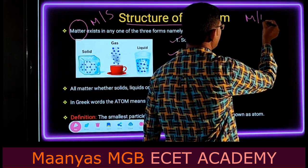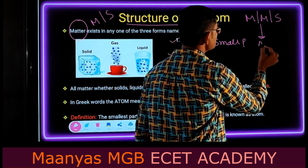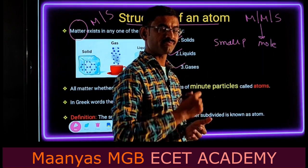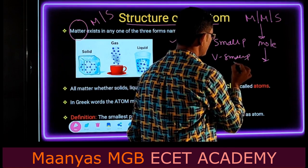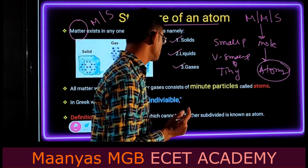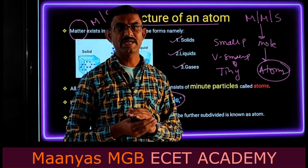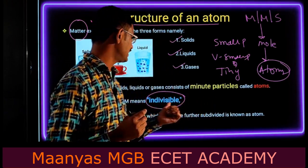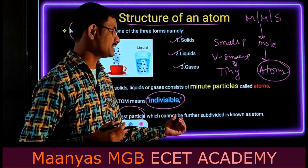Matter, or material or substance, can be divided into small particles known as molecules. The molecules are further subdivided into very small or tiny particles known as atoms. In Greek, the word 'atom' means indivisible. The smallest particle which cannot be further subdivided is known as an atom.